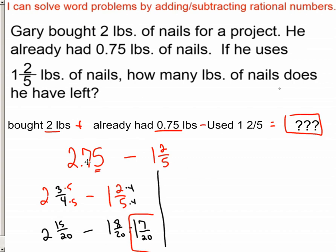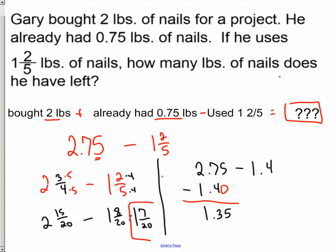Now, over here, this is a decimal already, so 2.75, and we need to turn this mixed number into a decimal. So two divided by five is 0.4, so this becomes minus 1.4. And we can stack this up on top of each other and put it in a placeholder. And there we have it. It's 1.35 pounds of nails left over.